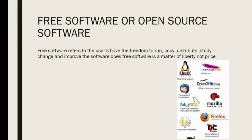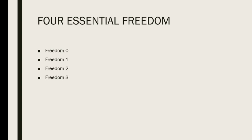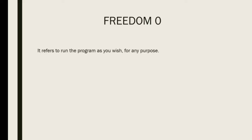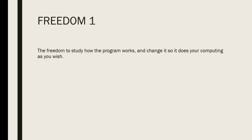A program is free software if the program's users have the four essential freedoms. The four essential freedoms are Freedom 0, Freedom 1, Freedom 2, and Freedom 3. Freedom 0 refers to the freedom to run the program as you wish, for any purpose. Freedom 1 is the freedom to study how the program works and change it so it does your computing as you wish.